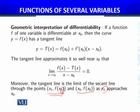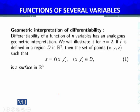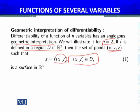Now we will try to do the geometric interpretation of differentiability for functions of two variables. Differentiability of a function of n variables has an analogous geometric interpretation. We will illustrate it for n = 2. If f is defined in a region D in ℝ², then the set of points (x, y, z) such that z = f(x, y), where (x, y) belongs to D, is a surface in three-dimensional space. Everybody knows that if a function is a function of two variables, then x, y, z are points in three-dimensional space.